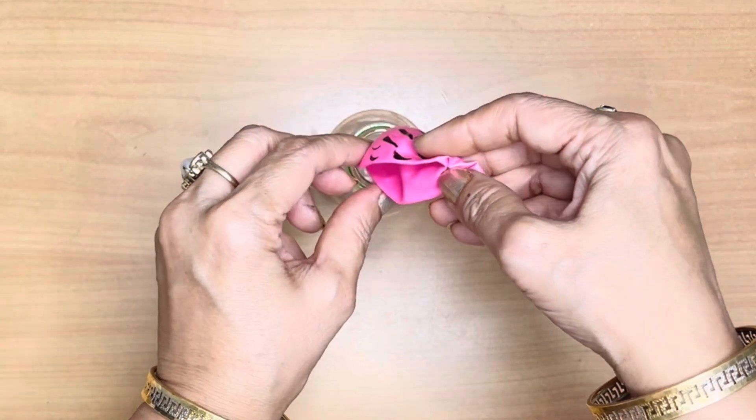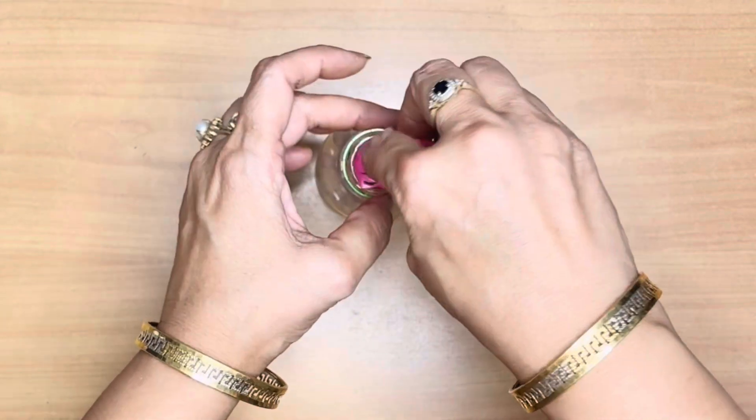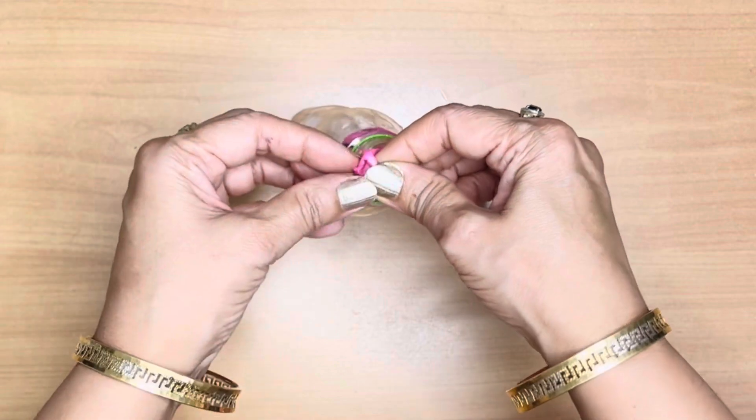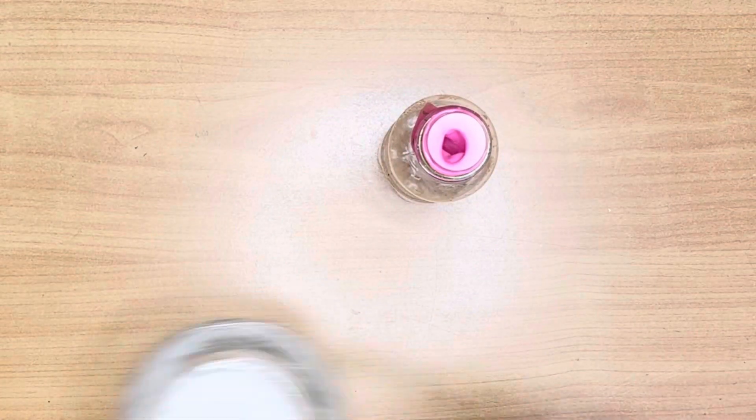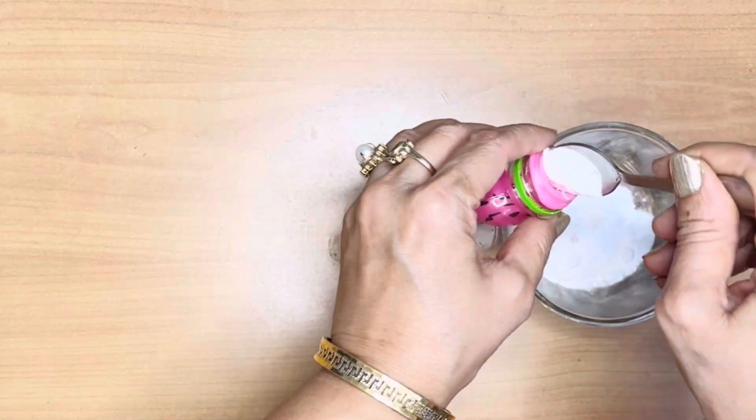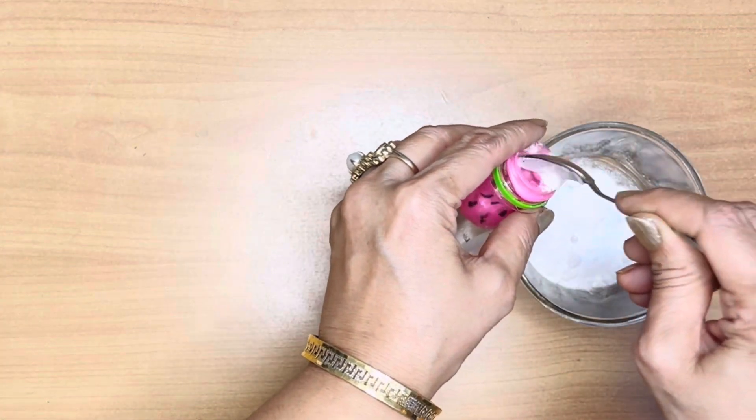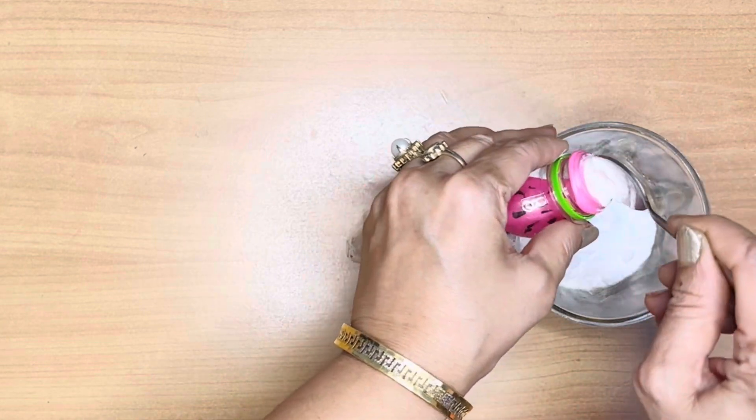Fix the balloon's neck to the bottle to hold it steady. Now, fill some baking soda into the balloon using a spoon.